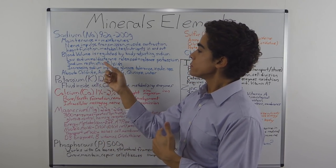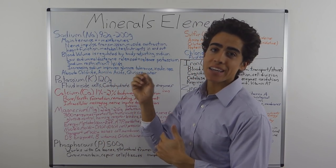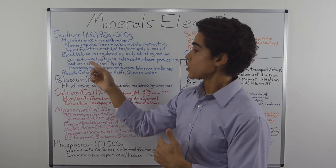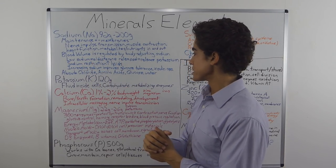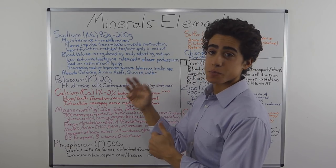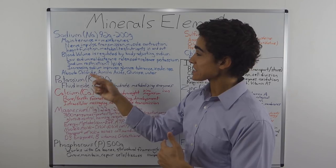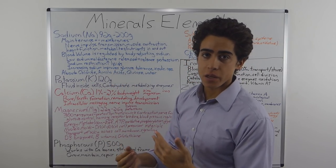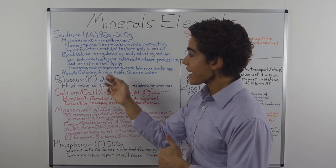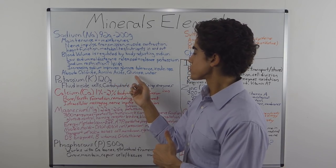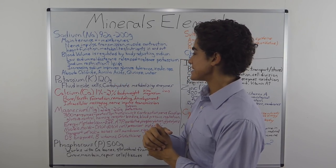Blood volume is regulated by the body adjusting its sodium content. When you have low sodium, aldosterone is released, and that releases potassium out of the body. Sodium restriction can actually increase your blood lipids, your cholesterol, and increasing sodium improves glucose tolerance as well as insulin resistance.